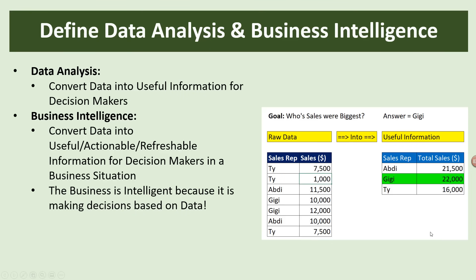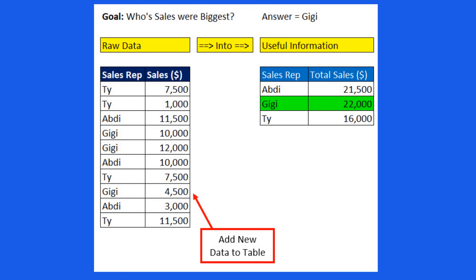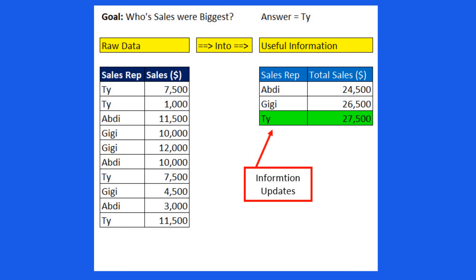Business intelligence we'll define as: convert data into useful, actionable, refreshable information for decision makers in a business situation. It says actionable — meaning from the useful information, we can act to make a decision. Refreshable is the amazing part, and that's what Excel and the power tools can do so well. That just means when we get new data, we want our useful information to update.